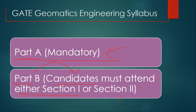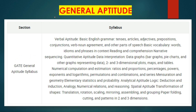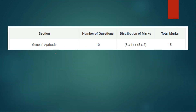In the mandatory section, that is Part A, there will be a General Aptitude section. As shown in the slide, numerical aptitude and verbal aptitude related questions will be there. The marking distribution for this section is 10 questions total — five questions for one mark and five questions for two marks — giving a total of 15 marks from the General Aptitude section.